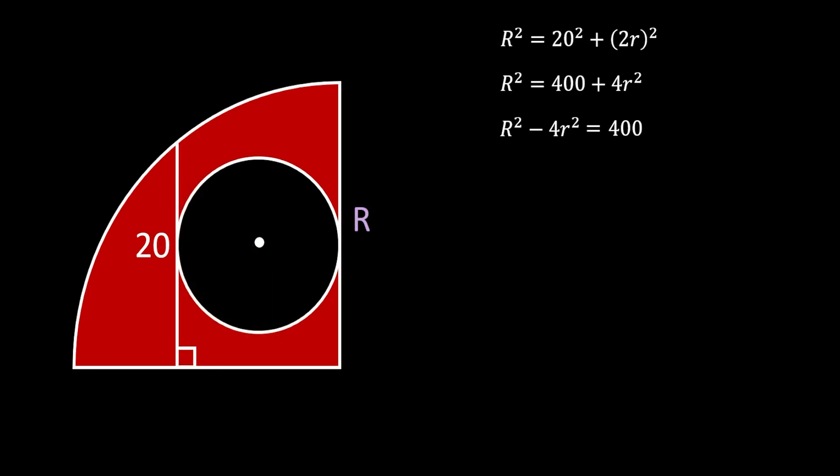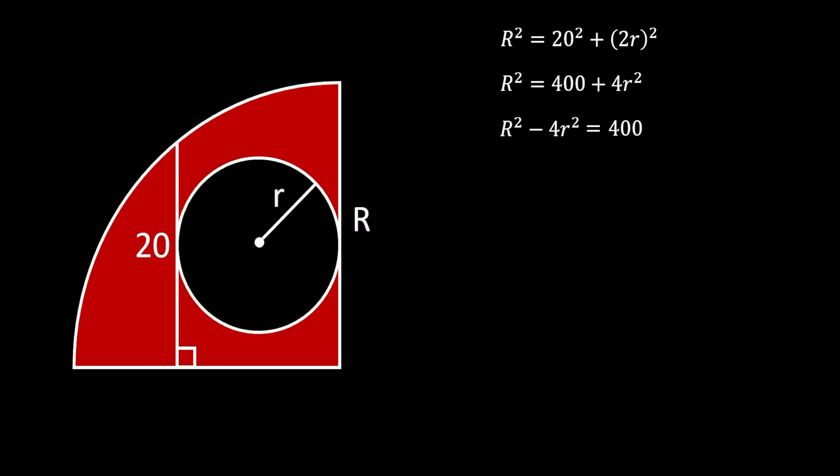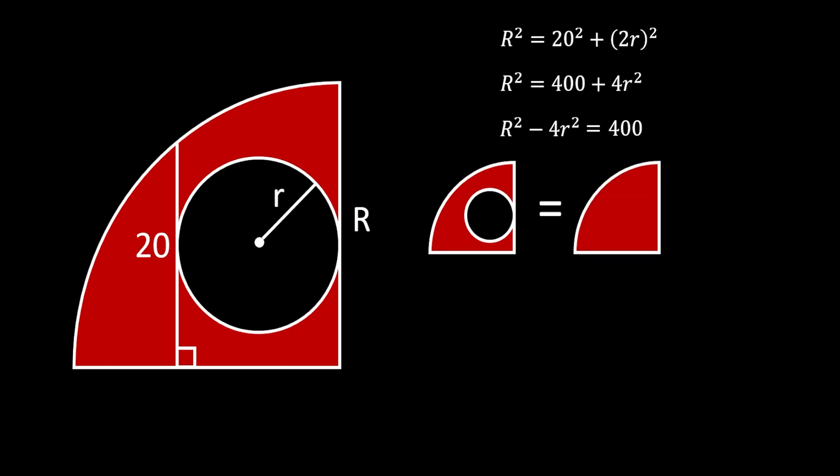Now let's take a look at our shaded area. In order to find this shaded area we first need to find the area of this quarter circle and from it we will subtract the area of this inner full circle.